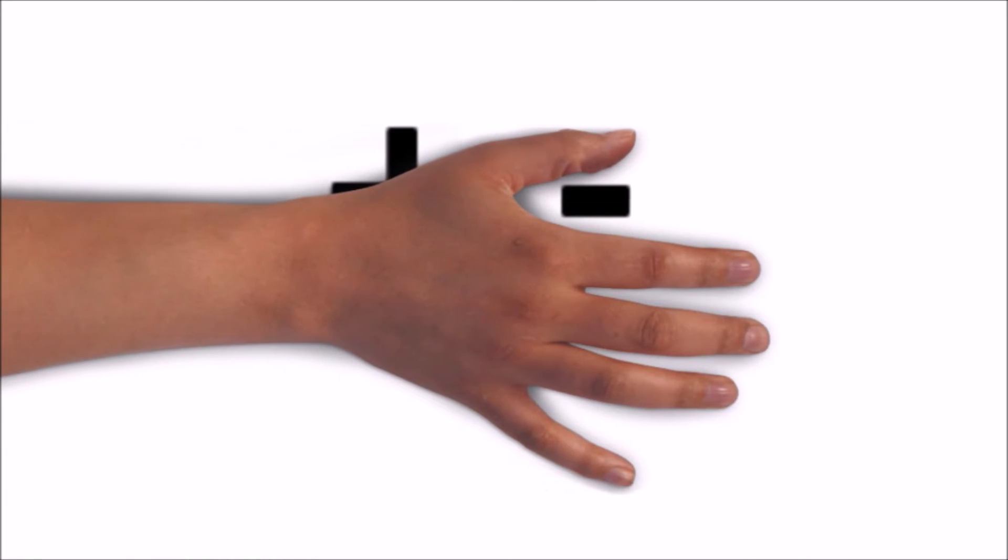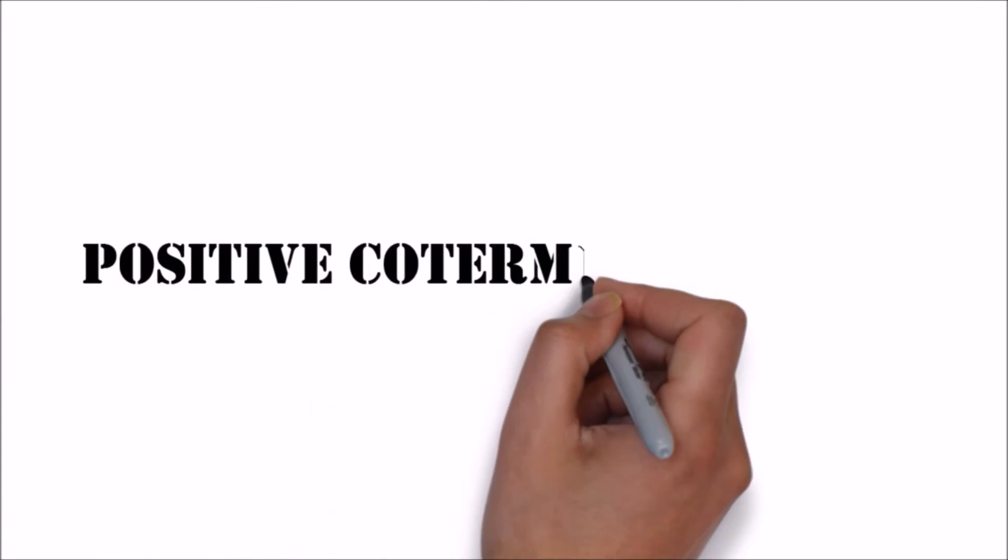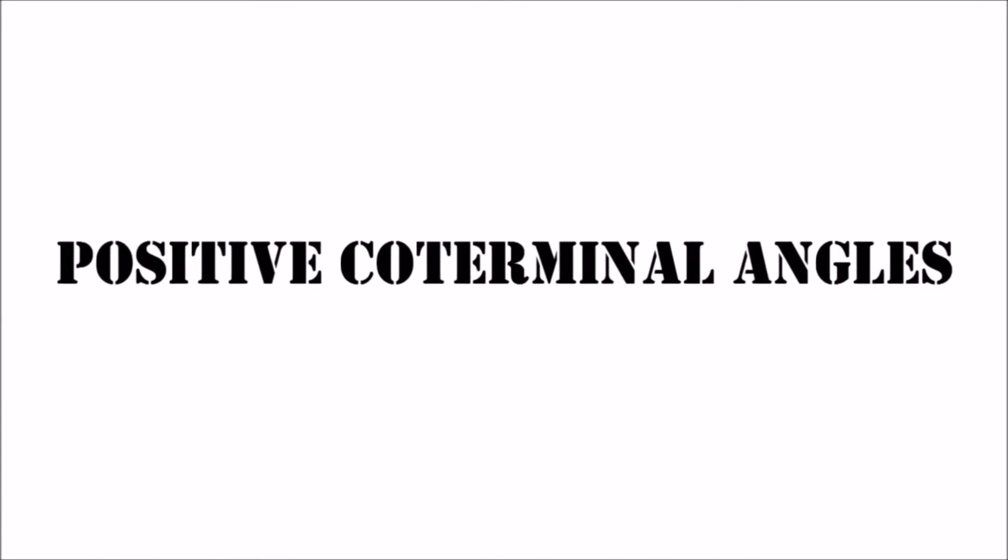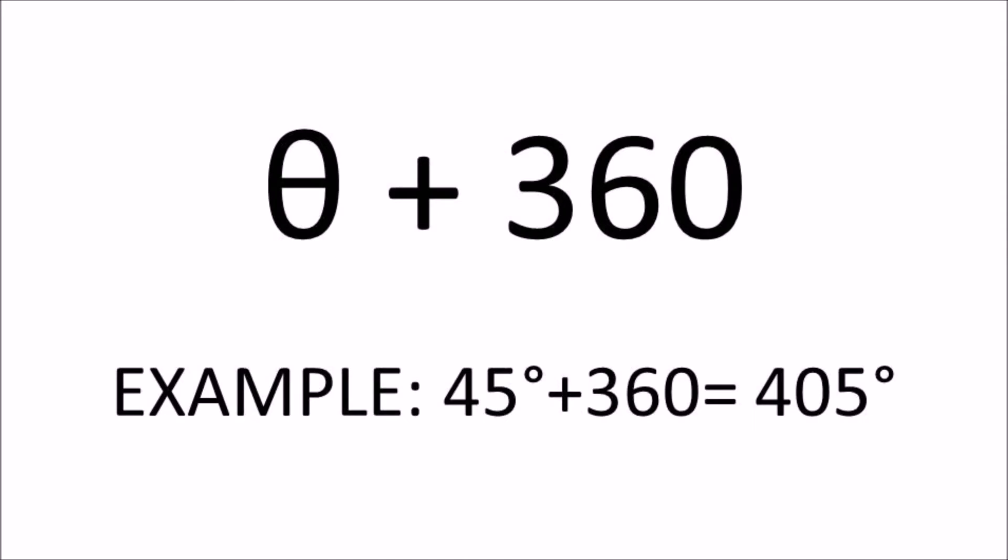Identify whether the given angle is positive or negative. If the angle is positive and you want to find a positive coterminal angle, add the given angle to 360. For example, 45 plus 360 is 405. The coterminal angle of 45 degrees is 405 degrees.